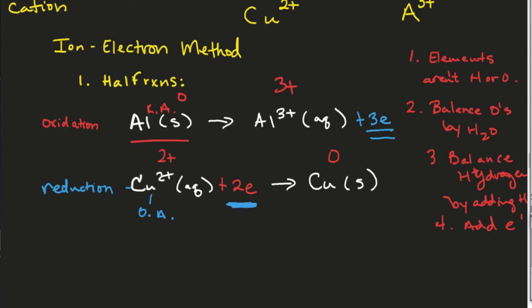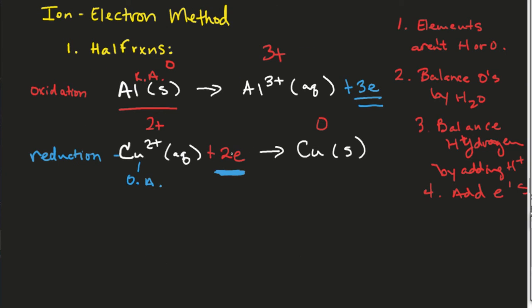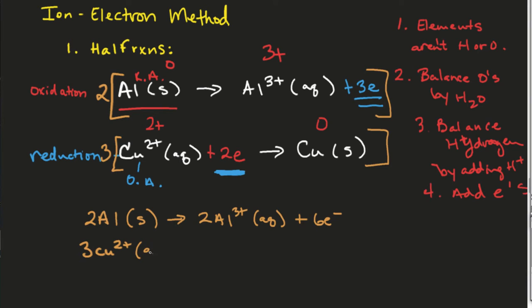So now what do we do? Are we done? What do I do? Good. So how would I achieve that goal? And? Is that it? Good. So when I do that, I'm going to get 2Al solid, 2Al3+ aqueous, plus six electrons, and then 3Cu2+ plus six electrons, three CuS. Now what do I do?